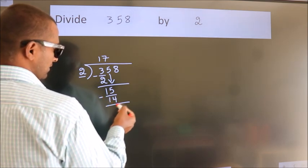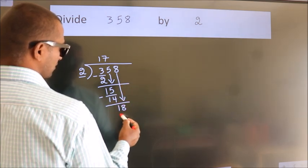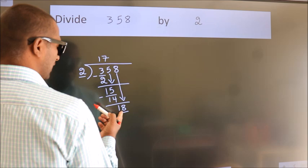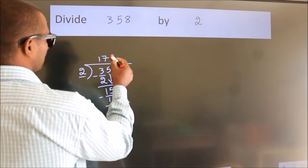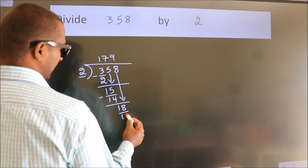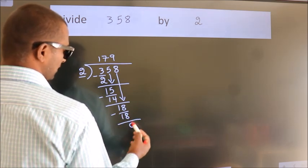After this, bring down the beside number. So, 8 down. So, 18. When do we get 18? In 2 table, 2 9s 18. Now, we subtract. We get 0.